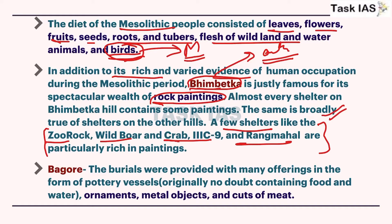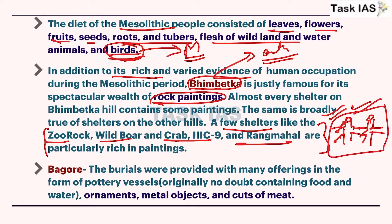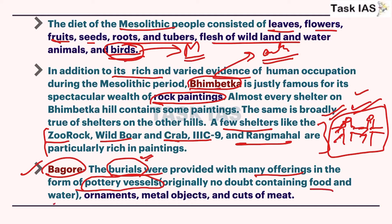You can draw some structures as well - for example, in Bhimbetka, people did group hunting and scenes show people collectively dancing and going for hunting collectively. Now, Bagor in Rajasthan: burial is provided with many offerings in the form of pottery vessels. These vessels have food, water, some ornaments, metal objects, and cuts of meat. Now you can understand that Homo sapiens started belief in ancestor worship or some kind of belief in the soul - that's why they placed material in burials.